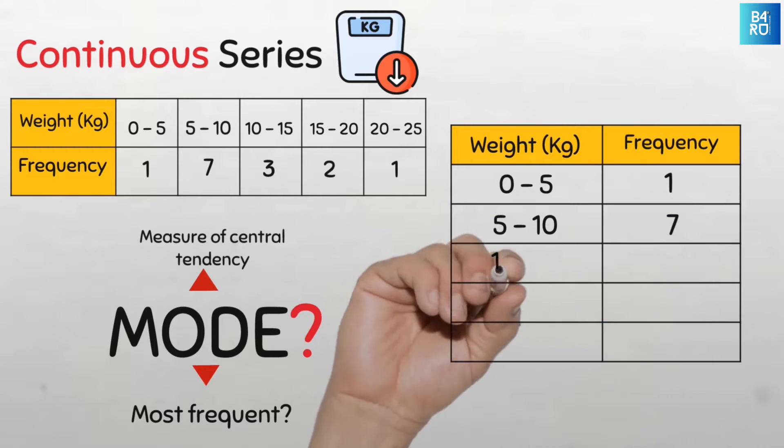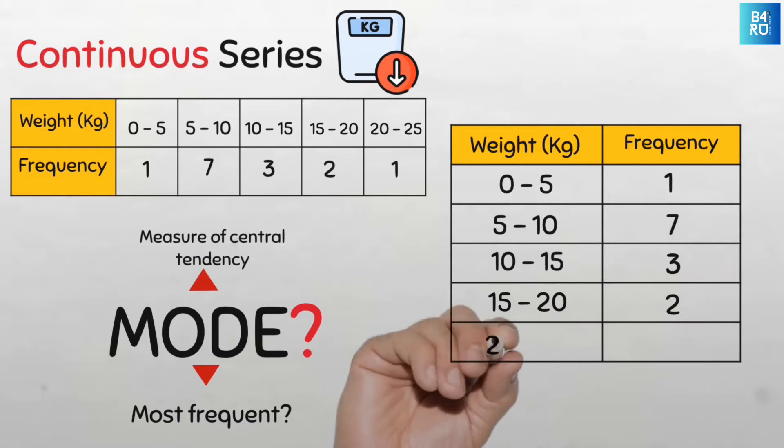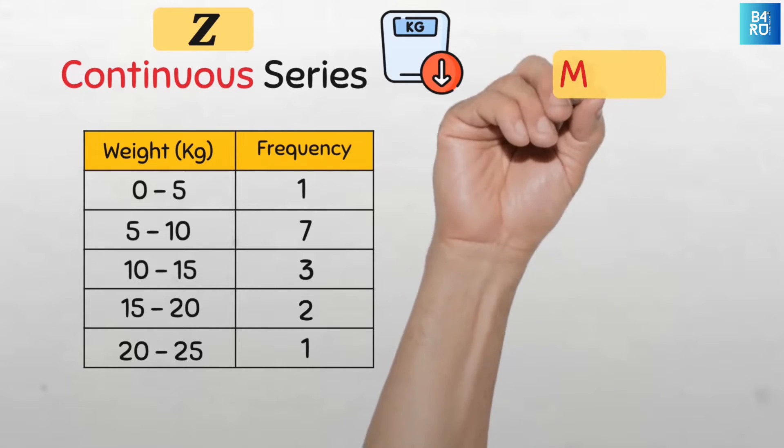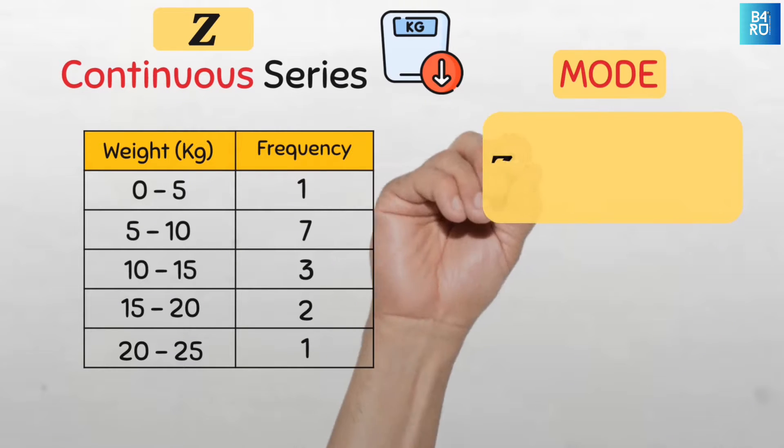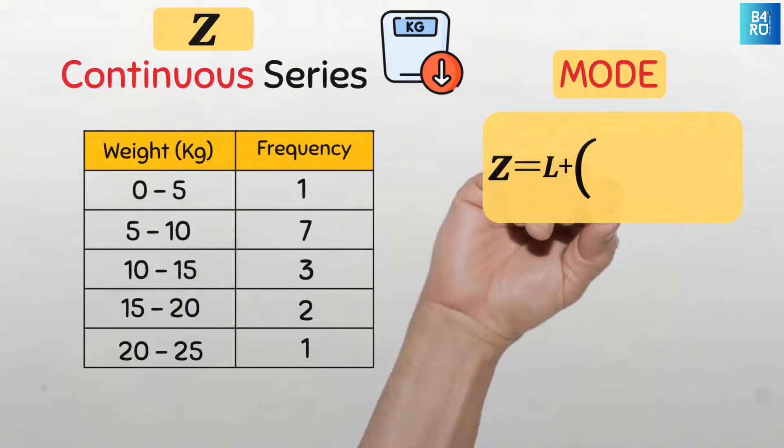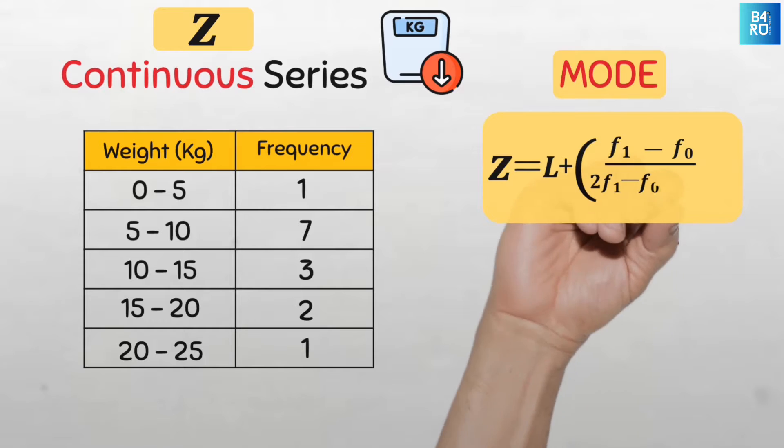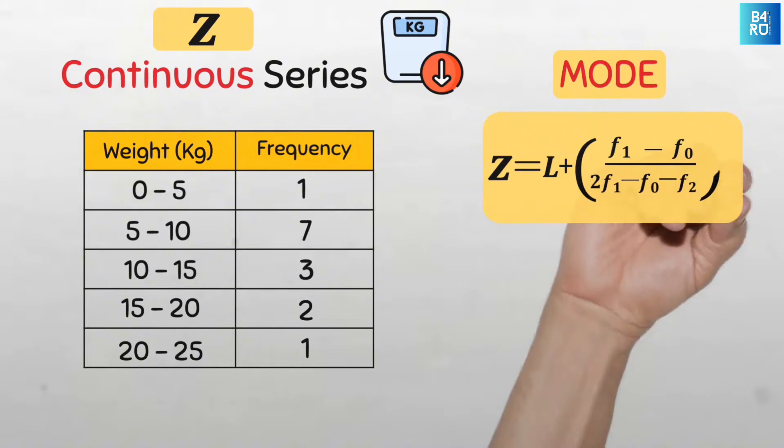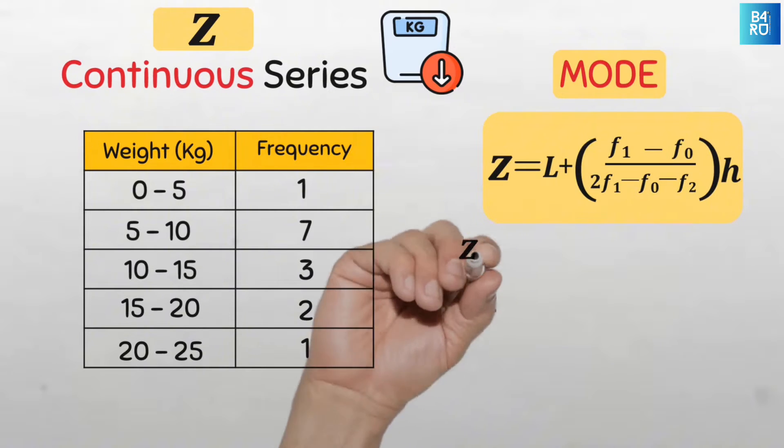The mode of continuous series data is given by the formula: Z equals L plus open parenthesis f sub 1 minus f sub 0 divided by 2 times f sub 1 minus f sub 2 close parenthesis multiplied by lowercase h.